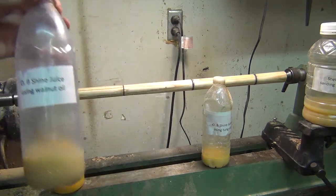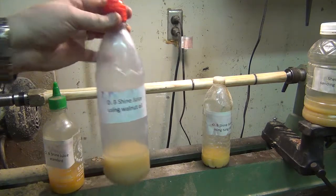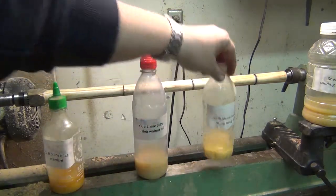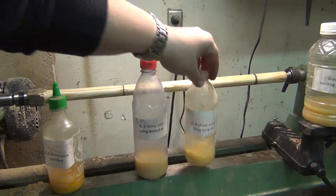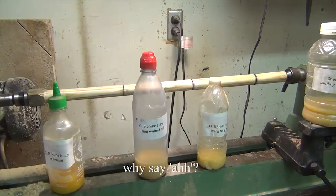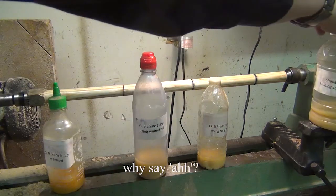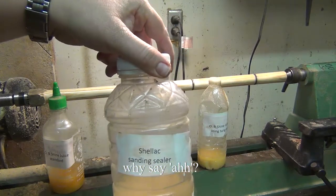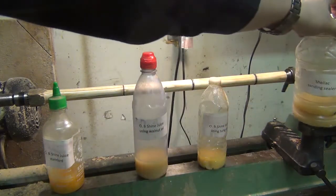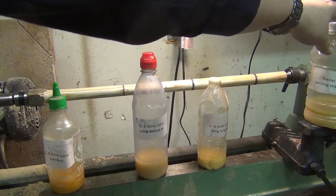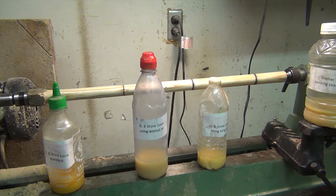I replaced the boiled linseed oil with walnut oil in one and replaced it with tung oil in another. I also have one section where I just did a shellac and denatured alcohol as a sanding sealer. And this is just an update on that test.